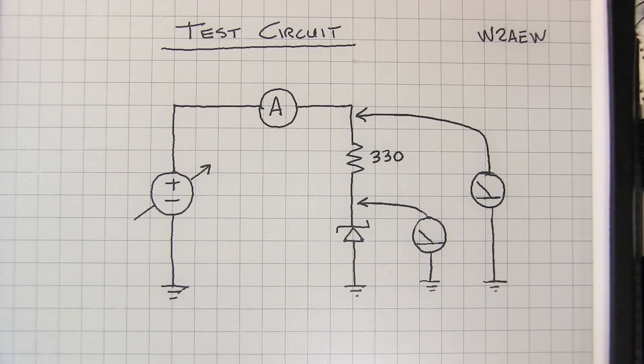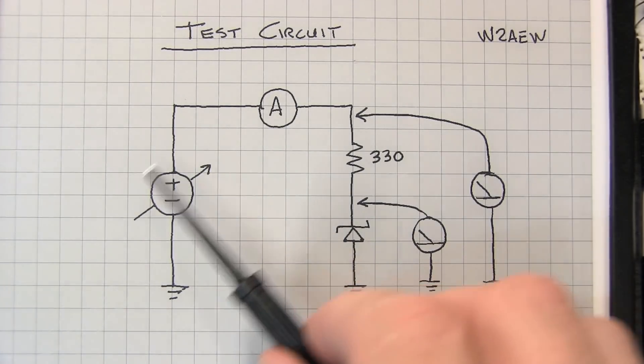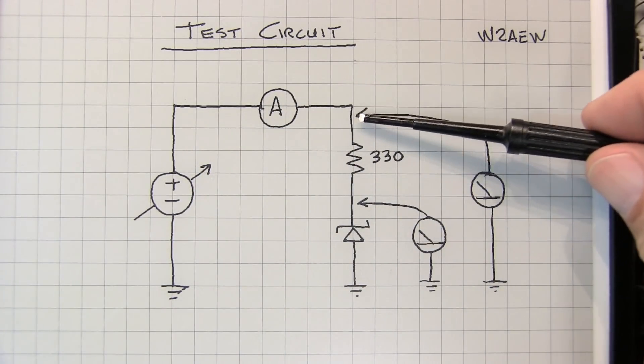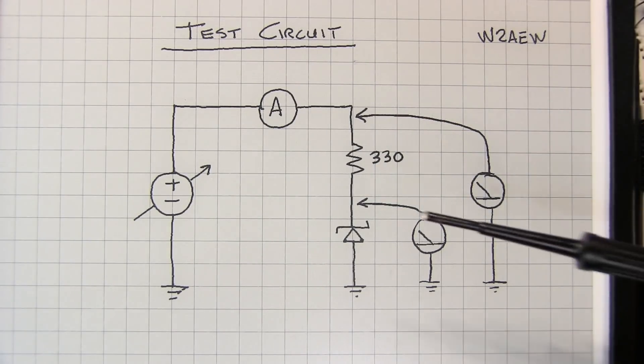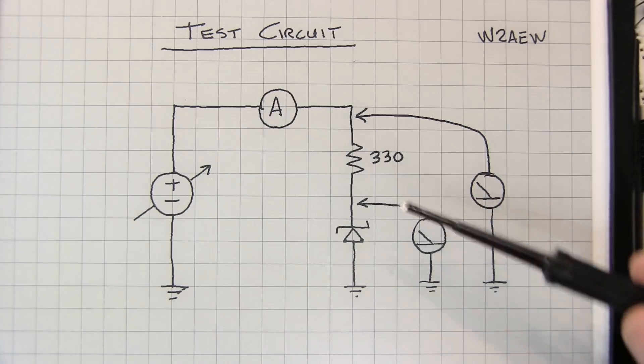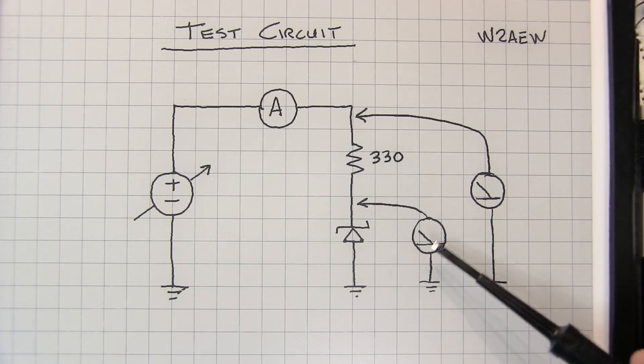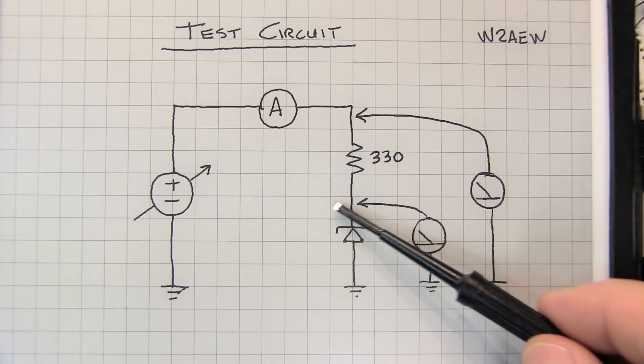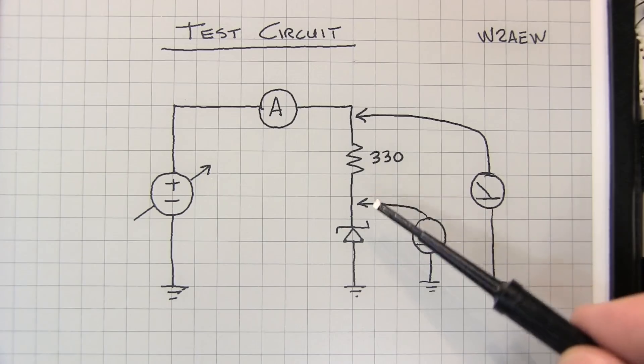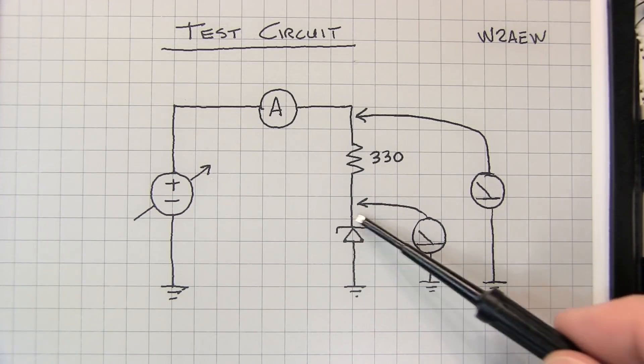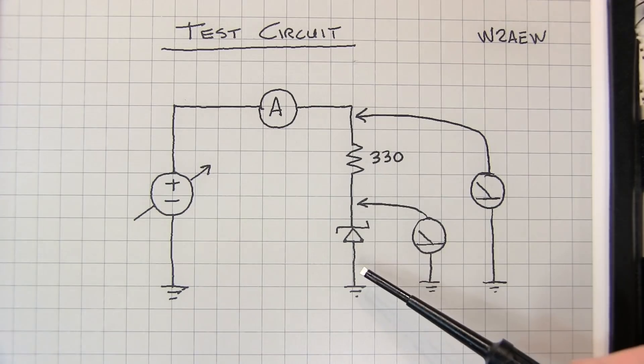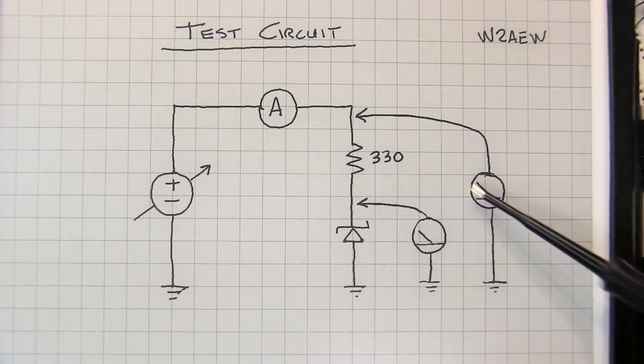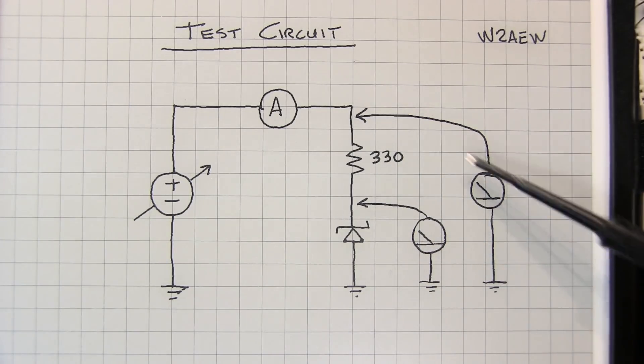Now to demonstrate the operation of a Zener, I've got this very simple test circuit. A variable DC power supply connected through an ammeter, so we can measure the current going through the bias resistor, in this case 330 ohms, and my Zener diode. I've got two voltmeters hooked up here, one directly across the Zener to see that reverse voltage, and I'm calling it reverse voltage because I've got the cathode here and the anode here, so from the diode's perspective it's reverse bias.